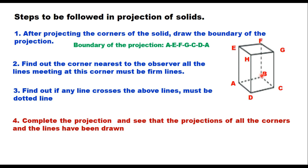The fourth step is to complete the projection and verify that projections of all corners and lines have been drawn. These four steps should always be followed when drawing projections of solids. The instructor will now go to the whiteboard to explain these four points in more detail so that there are no problems when drawing projection of a solid in any position.